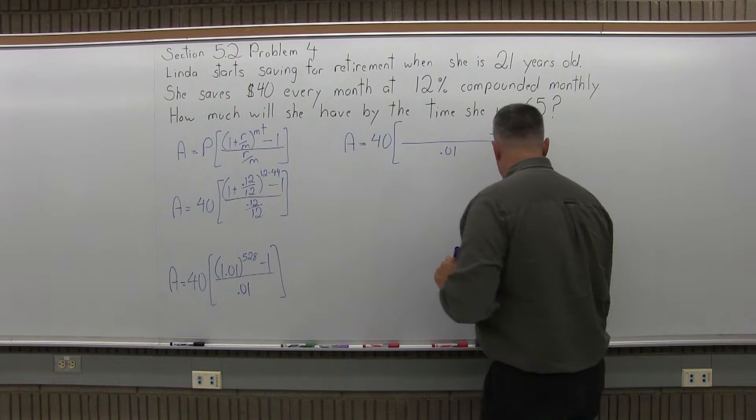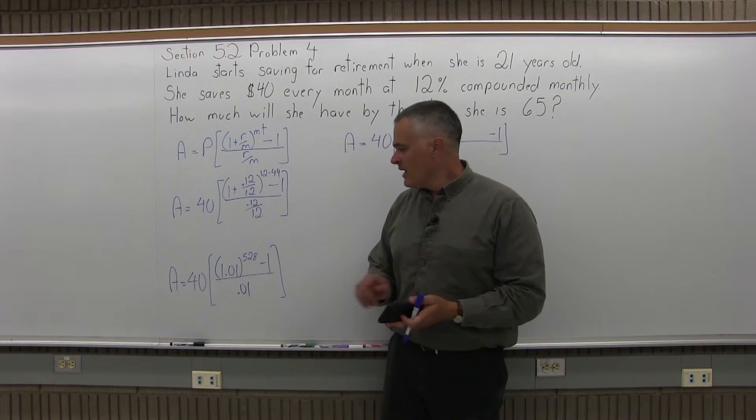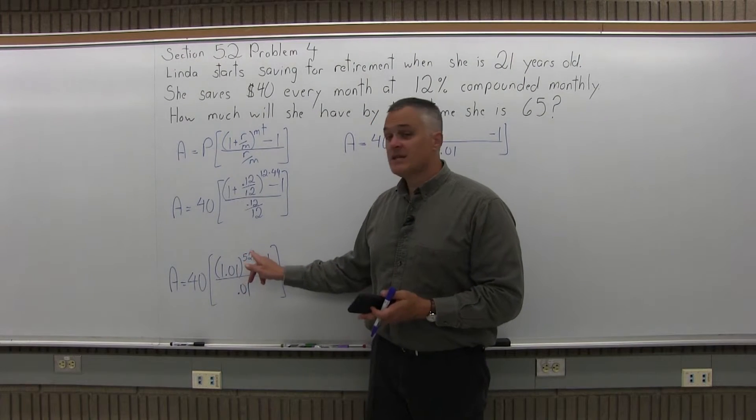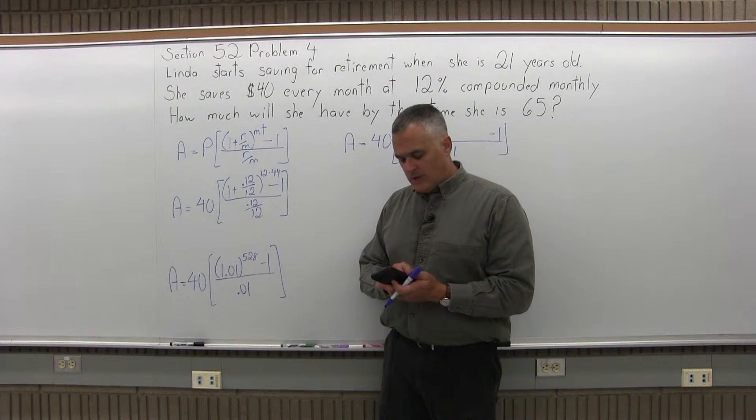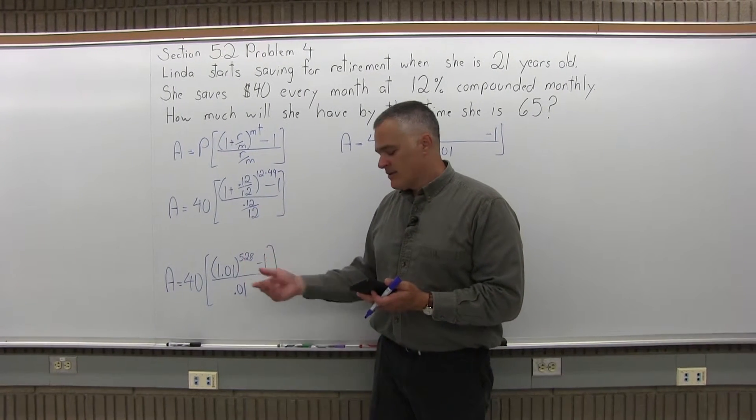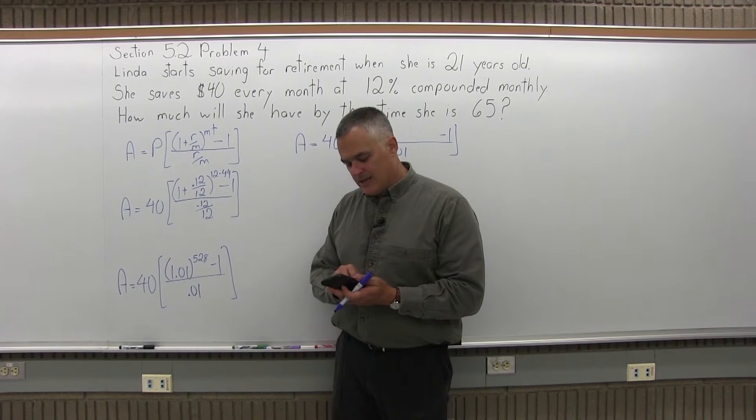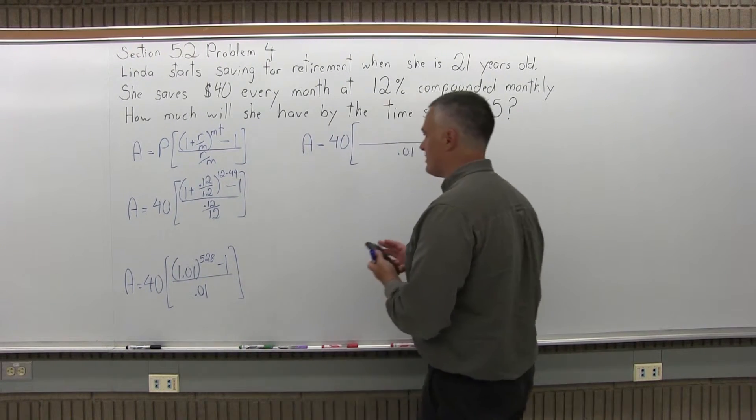So let's figure out what that big number is. That's not something I'd do without a calculator. So it's 1.01 times itself, 528 times. I'm going to put in the 1.01 in my calculator, press the exponent button of my calculator, and to the exponent of 528. The calculator tells me it's 191.28 something.